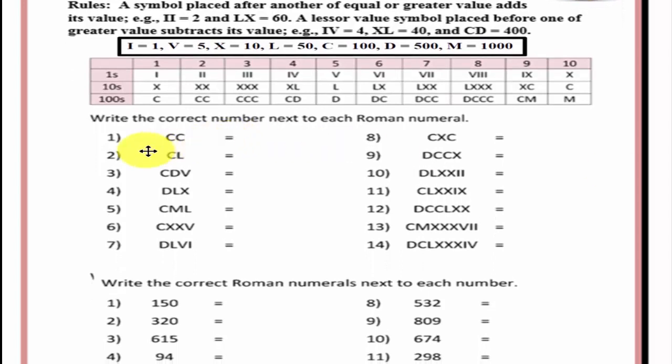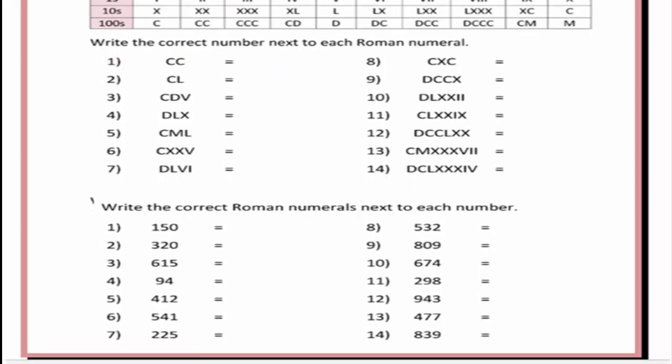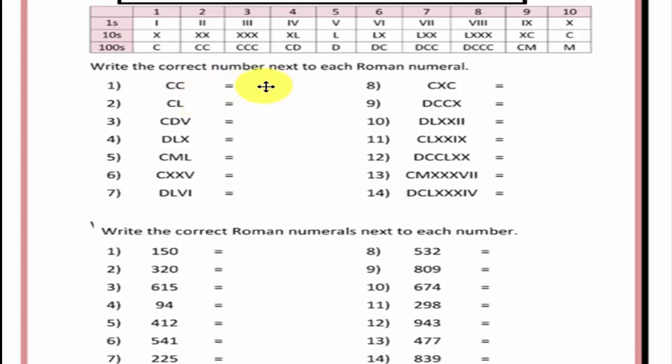Now what we'd like to have you do is, if you look carefully, you'll notice we have a set of Roman numerals. And we'd like to have you write the corresponding number associated with the Roman numeral. Now you'll notice that we have two c's, right? So for example, two c's, if you look carefully, that's going to be equal to 200.